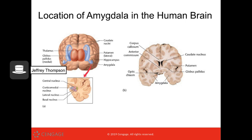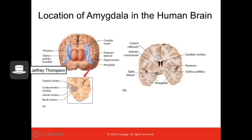Here we have our brain, and right there we've got our amygdala — a cute little thing. Differences in aggression are going to be based off of your genes and also your environment. Behavior is shaped by your genes and your environment.